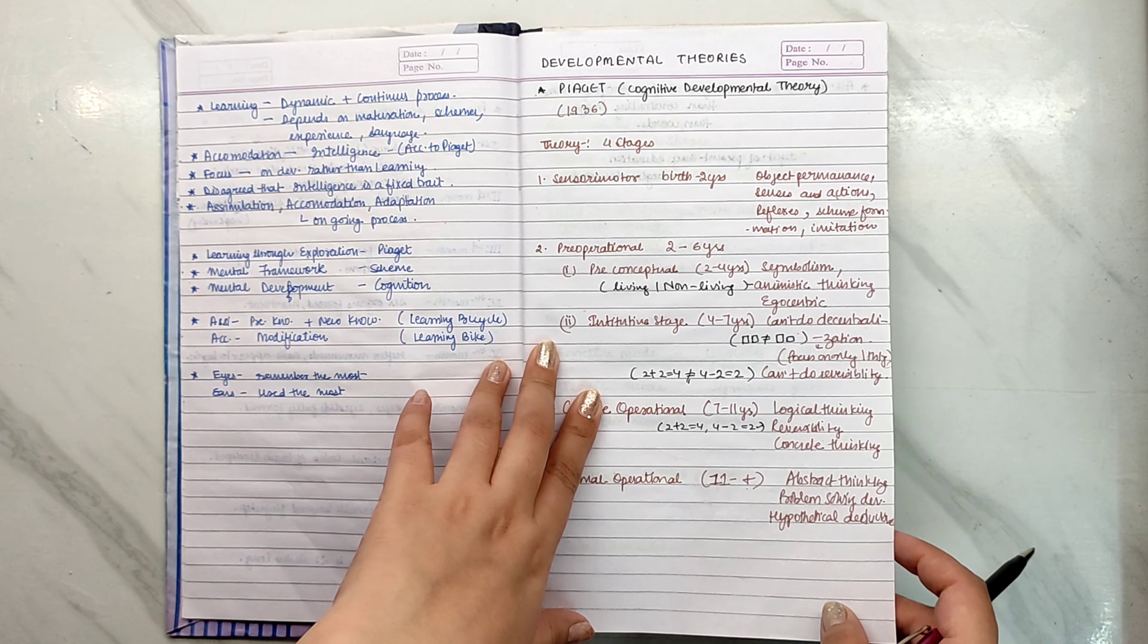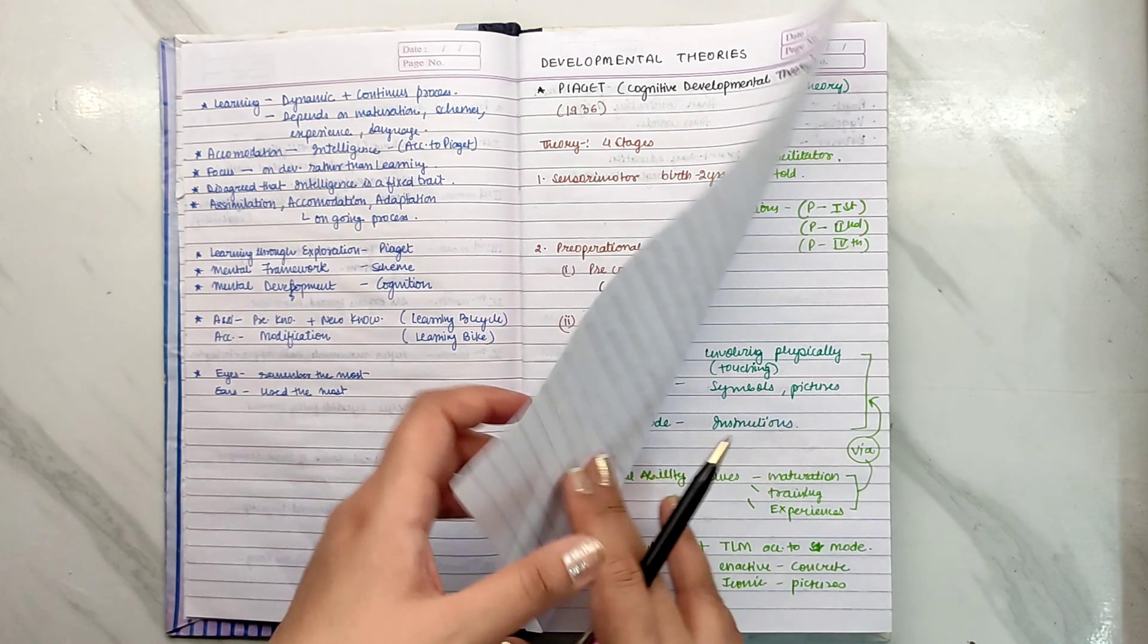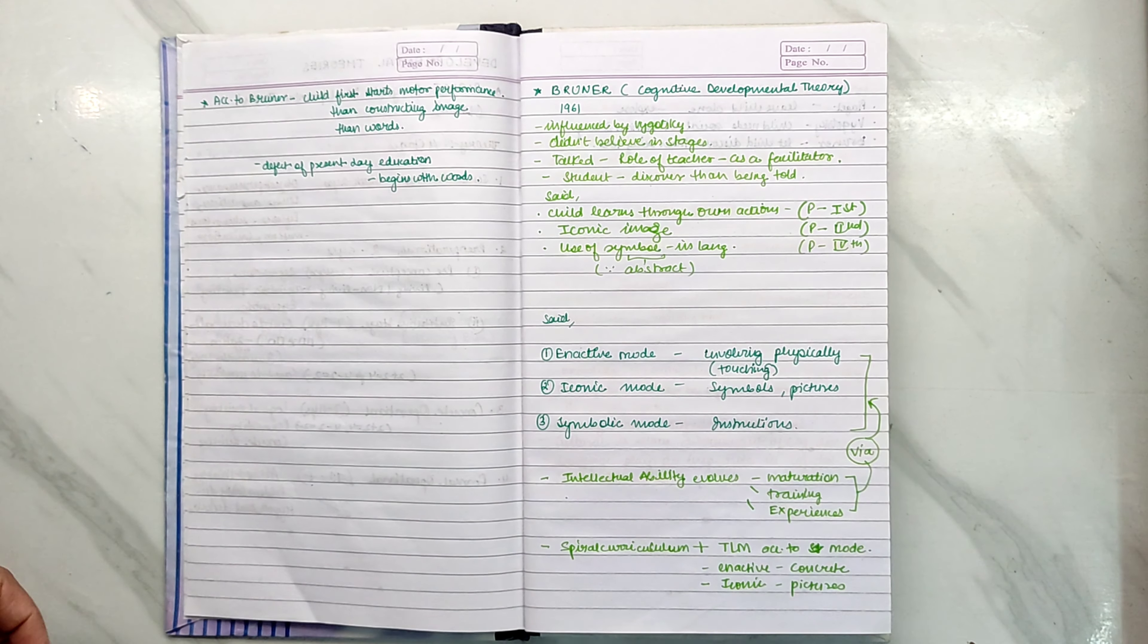So Piaget's Cognitive Developmental Theory is done. Now let's go to Bruner's side.